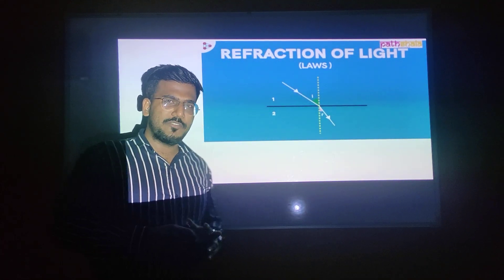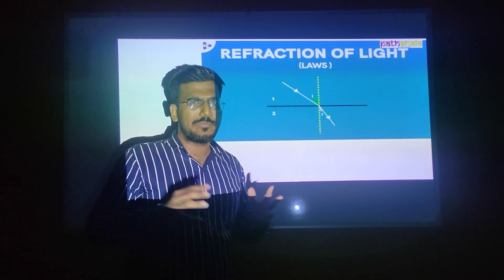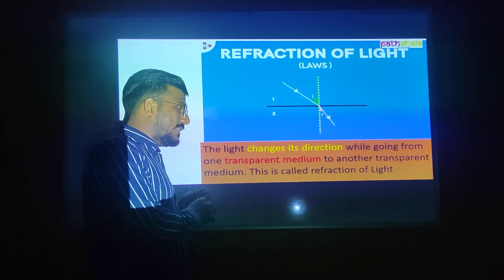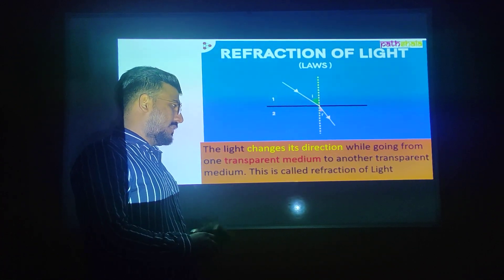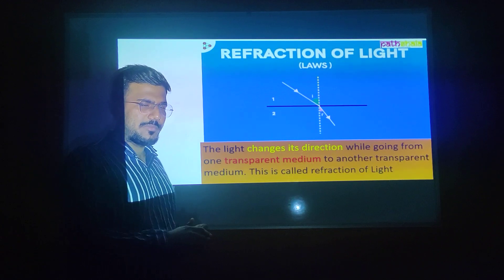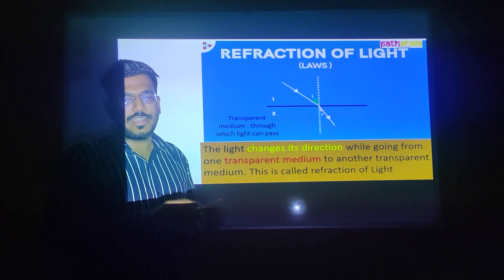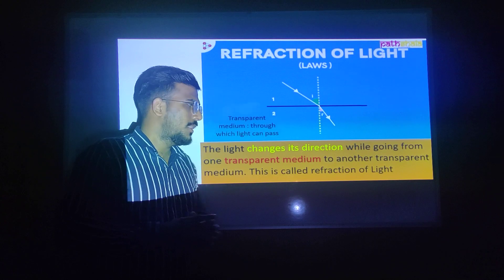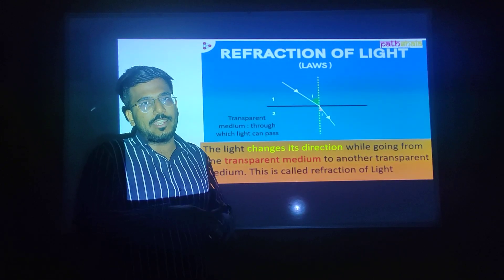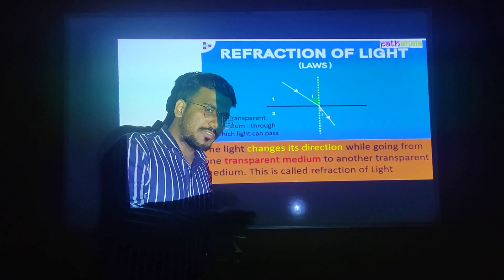What do we mean by refraction of light? When we send light from one medium to another medium, some part of the light bends — it changes its direction while going from one transparent medium to another transparent medium. This is called refraction of light. A transparent medium is one through which light rays can pass. So, the bending of light is called refraction of light.